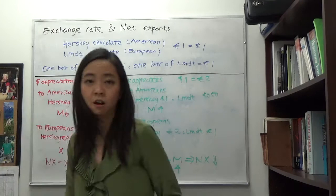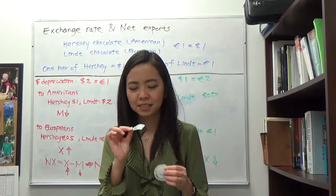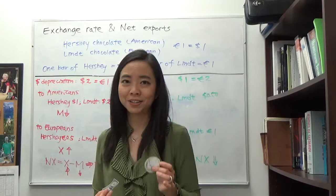Figuratively, when the dollar depreciates, it's as if our dollar becomes smaller. We have this tiny dollar and Europeans have relatively big euros. When we have this tiny dollar, we cannot afford to buy a lot of European goods because their goods are relatively expensive. But for them, their euros are big, so they can afford to buy a lot of American goods. That's the reason why our net exports go up.